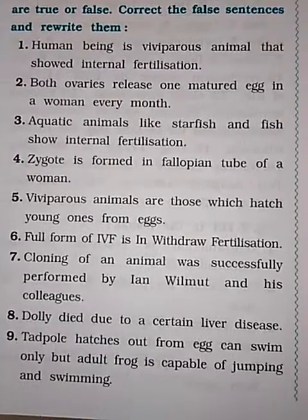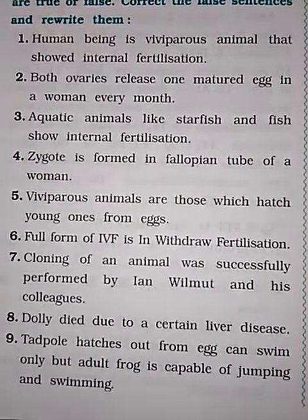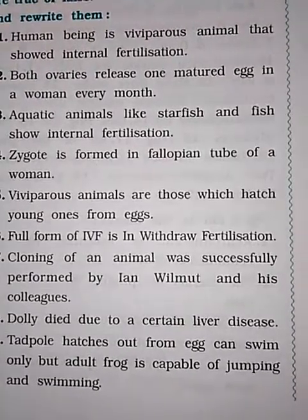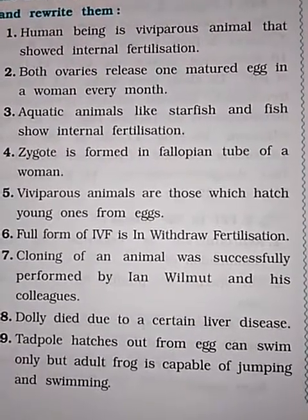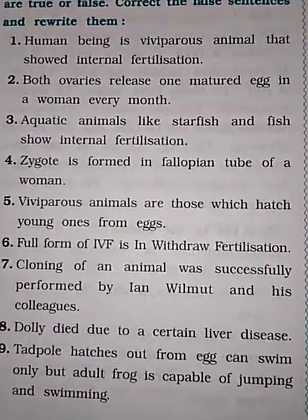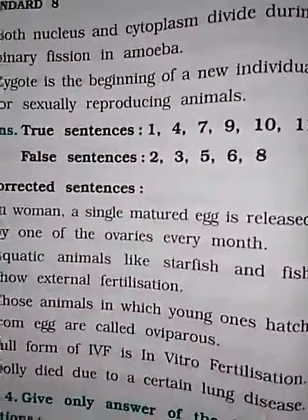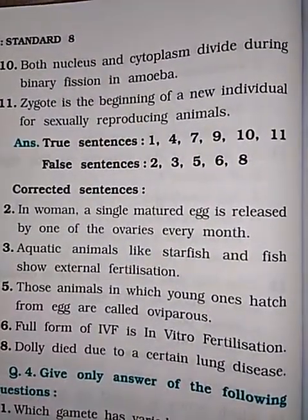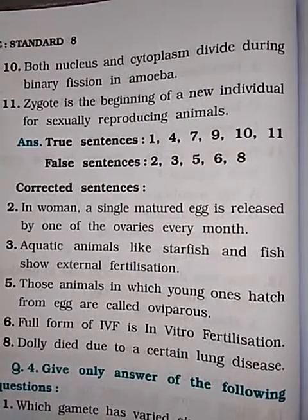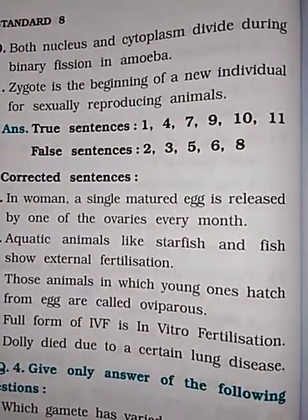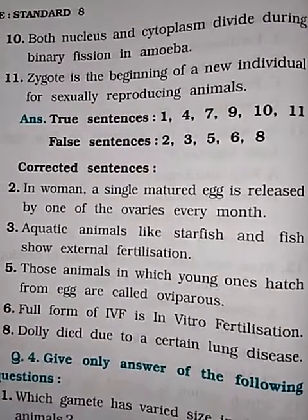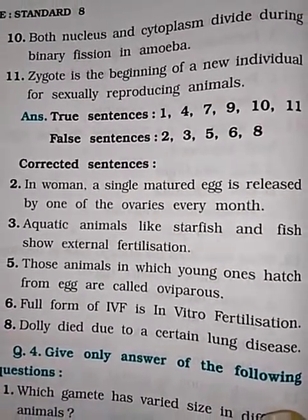Answer: True. Question: Dolly died due to a certain liver disease. Answer: False. Question: Tadpole hatches out from egg and can swim only, but adult frog is capable of jumping and swimming. Answer: True. Question: Both nucleus and cytoplasm divide during binary fission in amoeba. Answer: True. Question: Zygote is the beginning of a new individual for sexually reproducing animals. Answer: True.